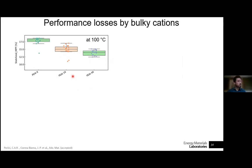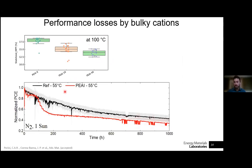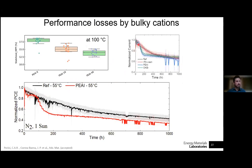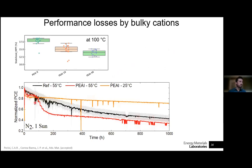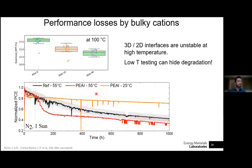Performance decreases are observed in pristine devices under thermal stress, and also during maximum power point tracking under one sun illumination at 55°C — relevant to solar operation — where after about 100 hours the phenethylammonium iodide-treated devices show a sharp drop in performance. This drop is especially related to changes in current, with the increased thickness of the bulky cation layer responsible for worsened charge carrier extraction. Importantly, these variations are observed only at high temperatures; at 25°C all dynamics are masked, so it is very important to test 2D/3D structures across different temperature ranges to reveal hidden degradation dynamics.